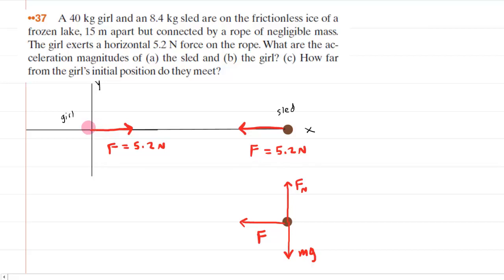After reading the question, we've drawn a girl located at the origin of an xy axis. Over here on the right side of the diagram we have the sled.